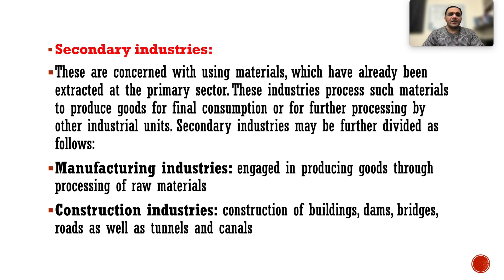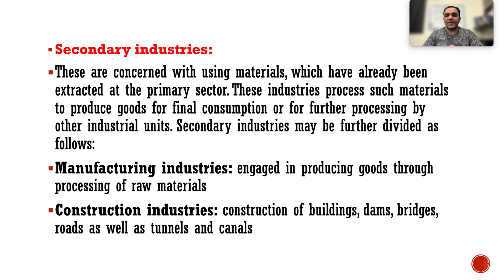Secondary industries are concerned with using materials which have already been extracted at the primary stage. These industries process such materials to produce goods for final consumption or for further processing by other industries. Secondary industry is further divided into manufacturing industry, which produces goods through processing of raw materials, and construction industry, which involves construction of buildings, dams, bridges, roads, tunnels and canals.